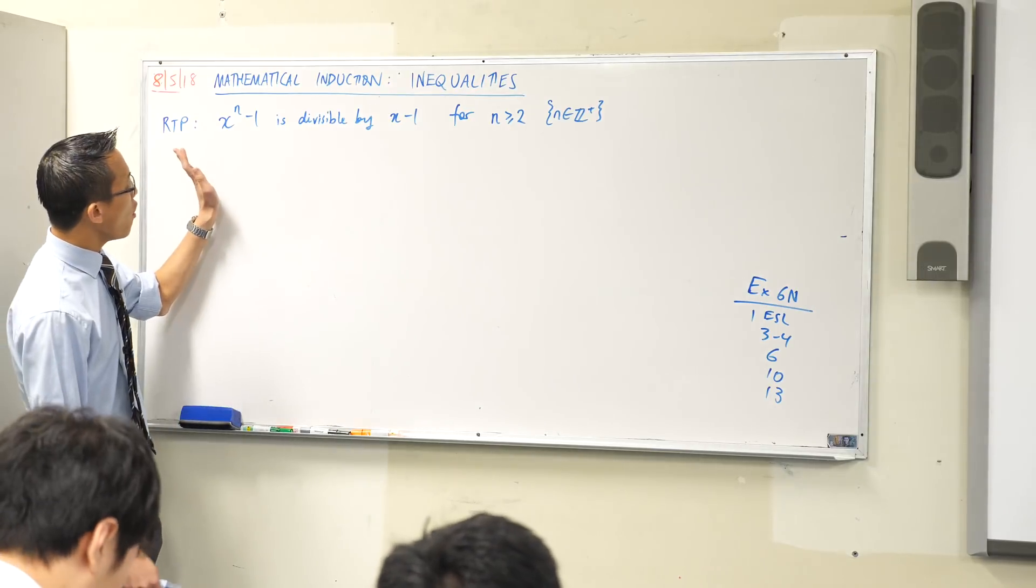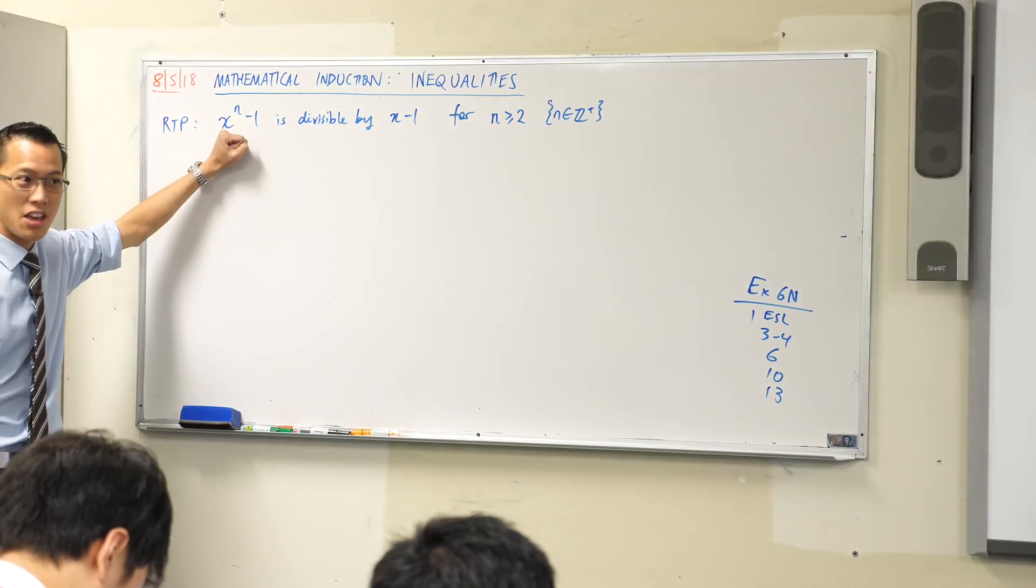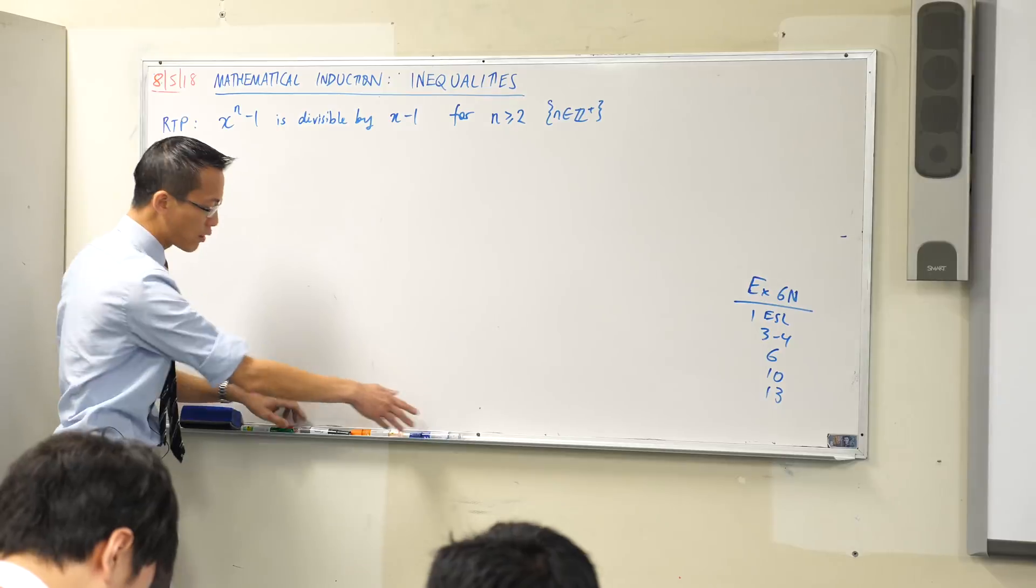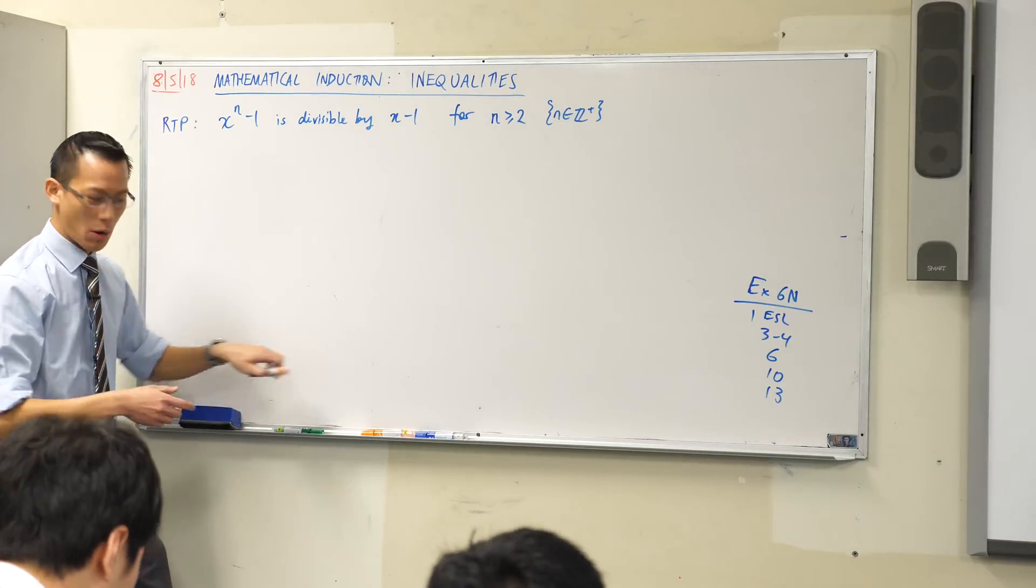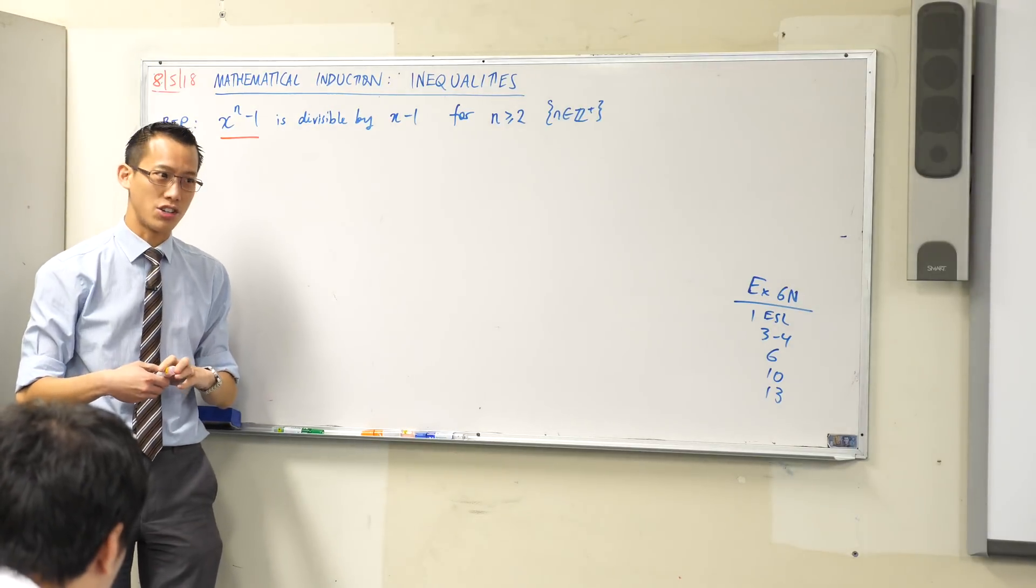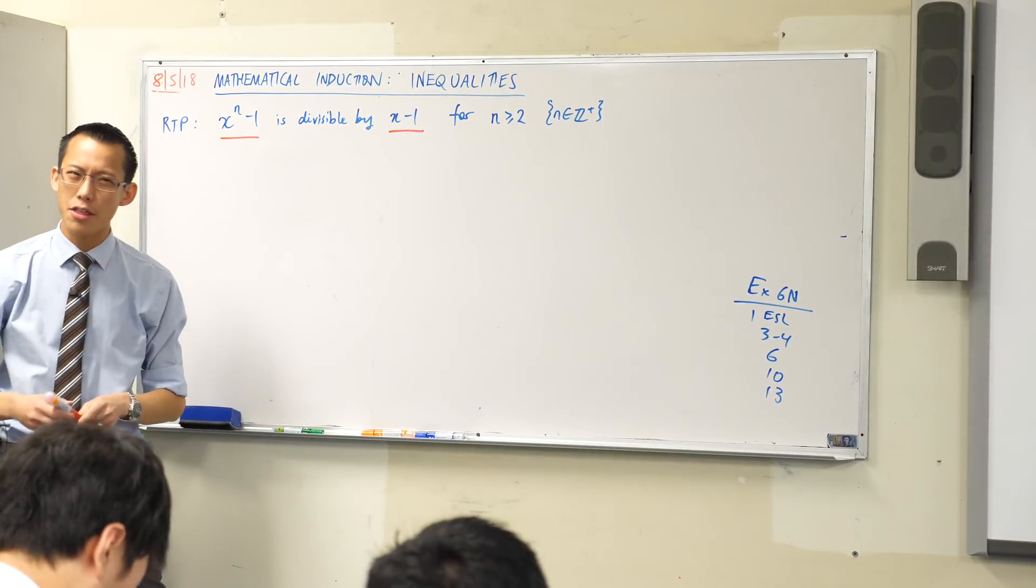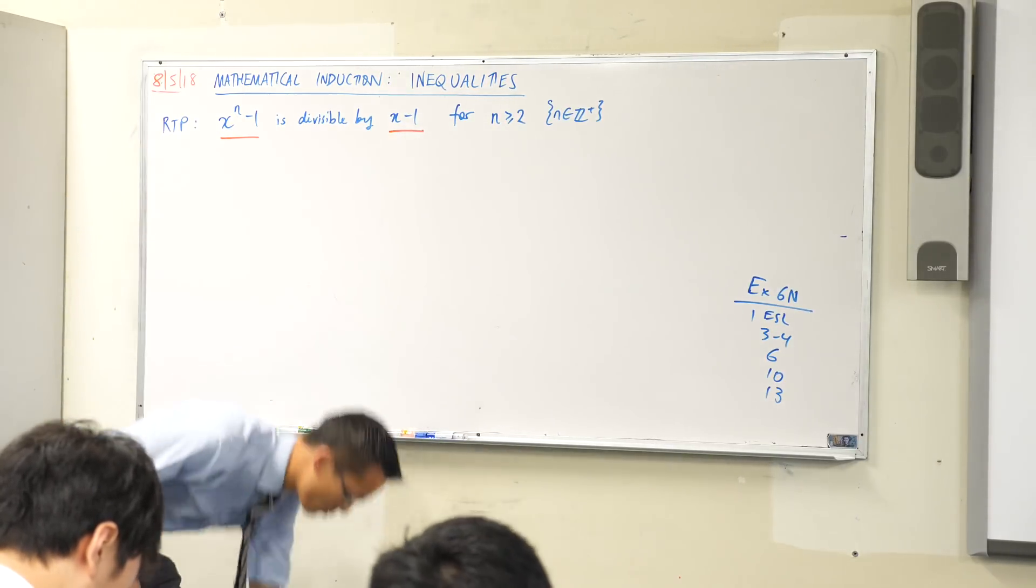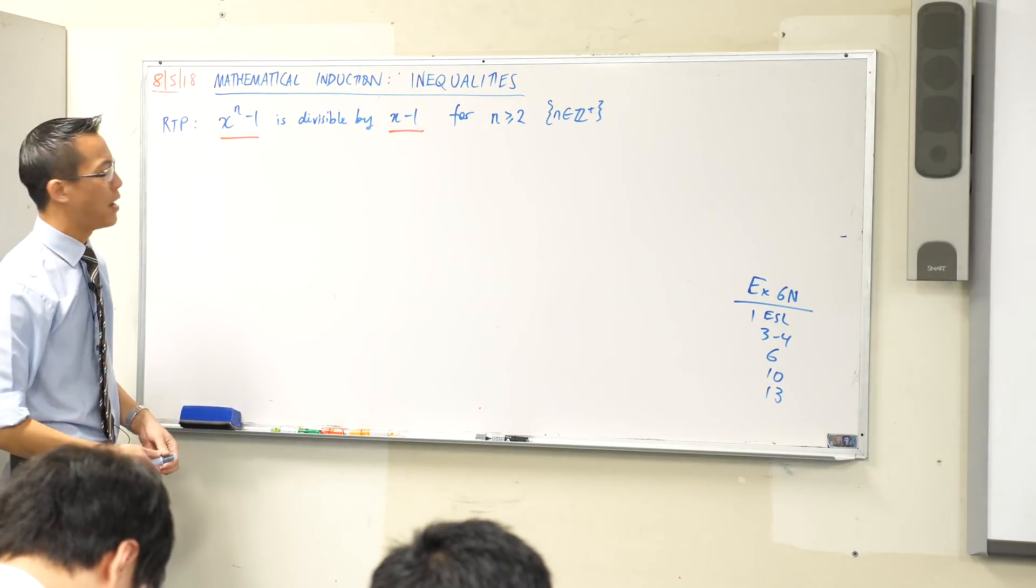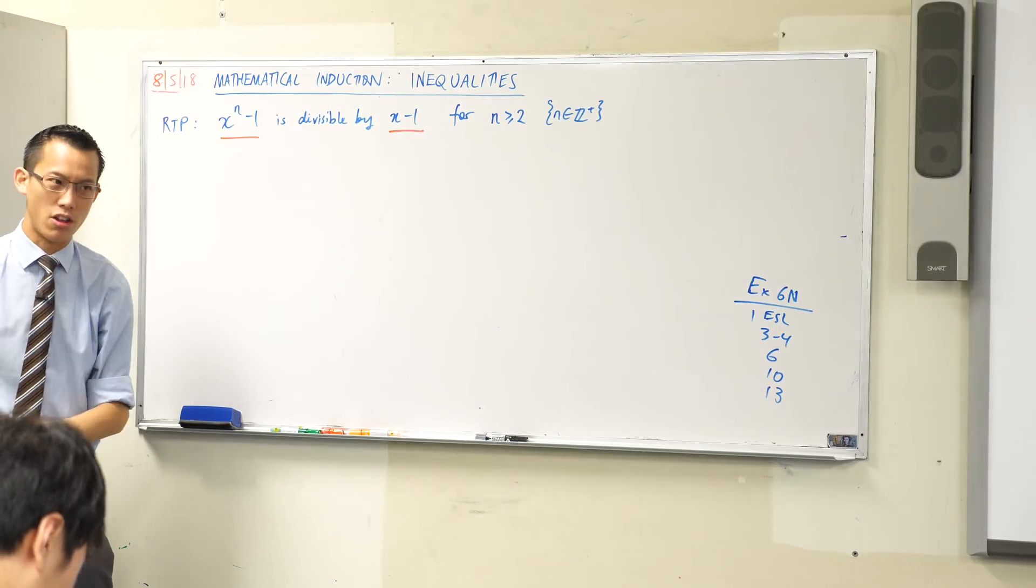Okay so think back to what it means to do a divisibility proof. You've got something you want to show that it can be divided by something else evenly. However what we're looking at here is quite different to what we had before. This is not a number it's a function it's a polynomial in fact and we're showing that it's divisible by some other polynomial namely that linear one x minus 1.